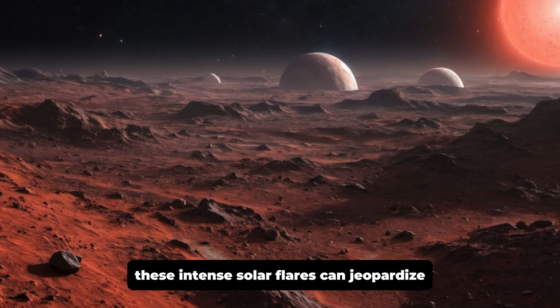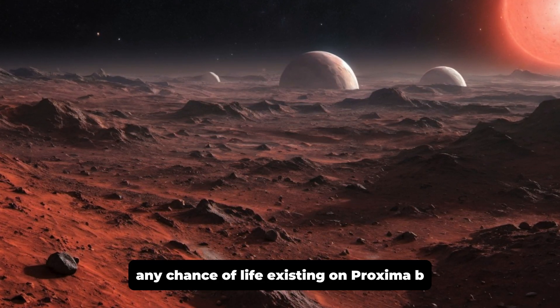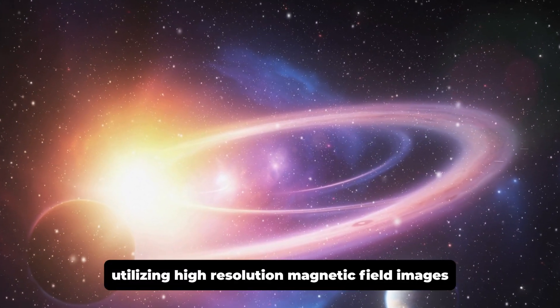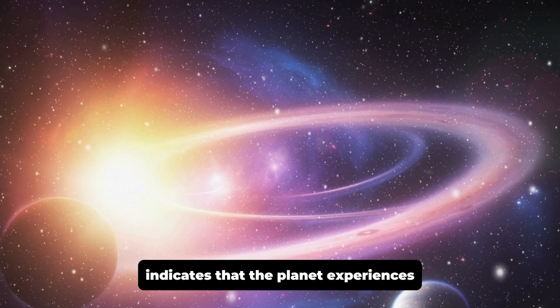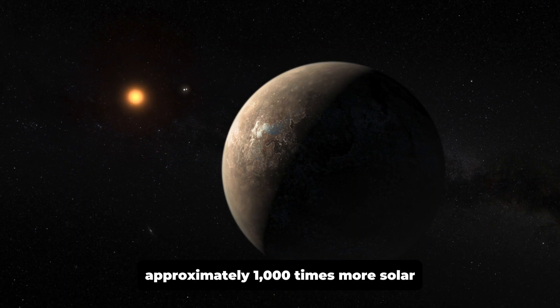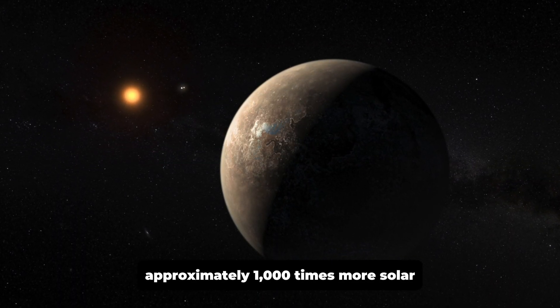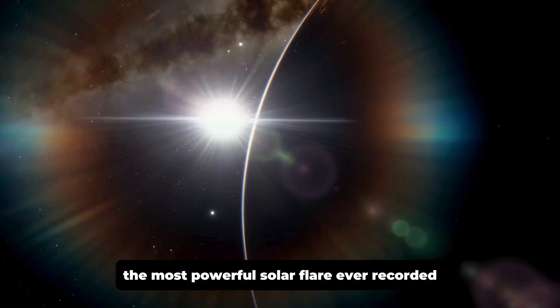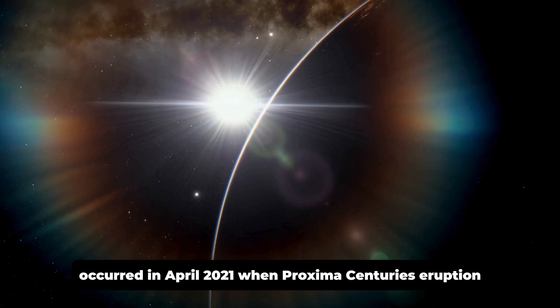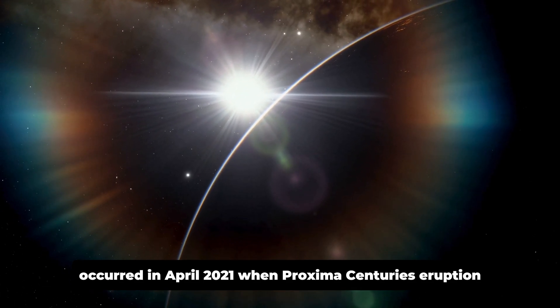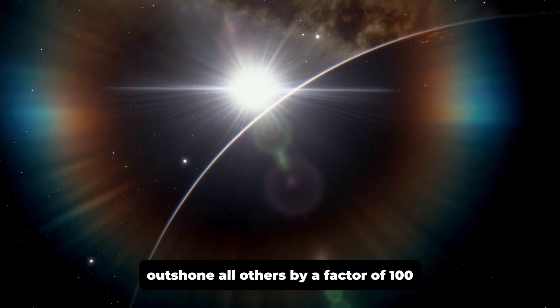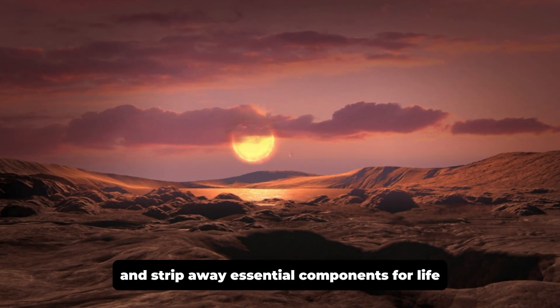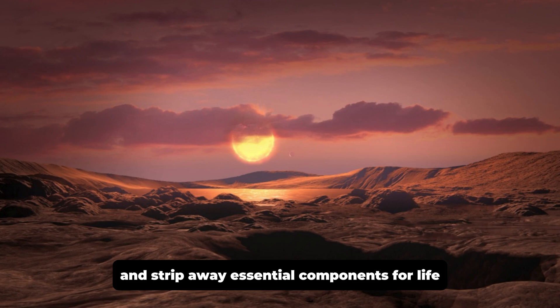These intense solar flares can jeopardize any chance of life existing on Proxima B. Recent research utilizing high-resolution magnetic field images indicates that the planet experiences approximately 1,000 times more solar wind radiation than Earth. The most powerful solar flare ever recorded occurred in April 2021, when Proxima Centauri's eruption outshone all others by a factor of 100. Such events can devastate any atmosphere and strip away essential components for life.